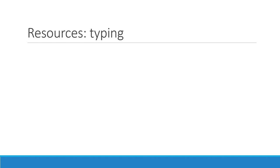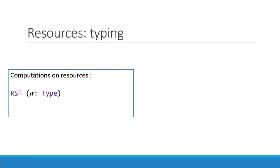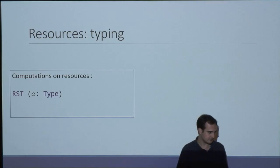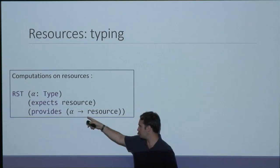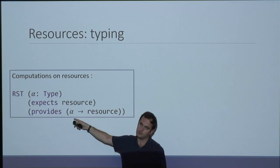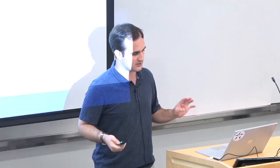Now we have to enforce that the heap actually corresponds to this description. We do that with resource typing. We leveraged F-Star's effect system and defined a new computation type called RST. For a computation of type alpha, we can say that the computation expects the heap satisfying all the things described in one resource, and provides after the computation a new resource describing the heap fragments after the computation. There's a function because the final resource can depend on the value returned by the computation.